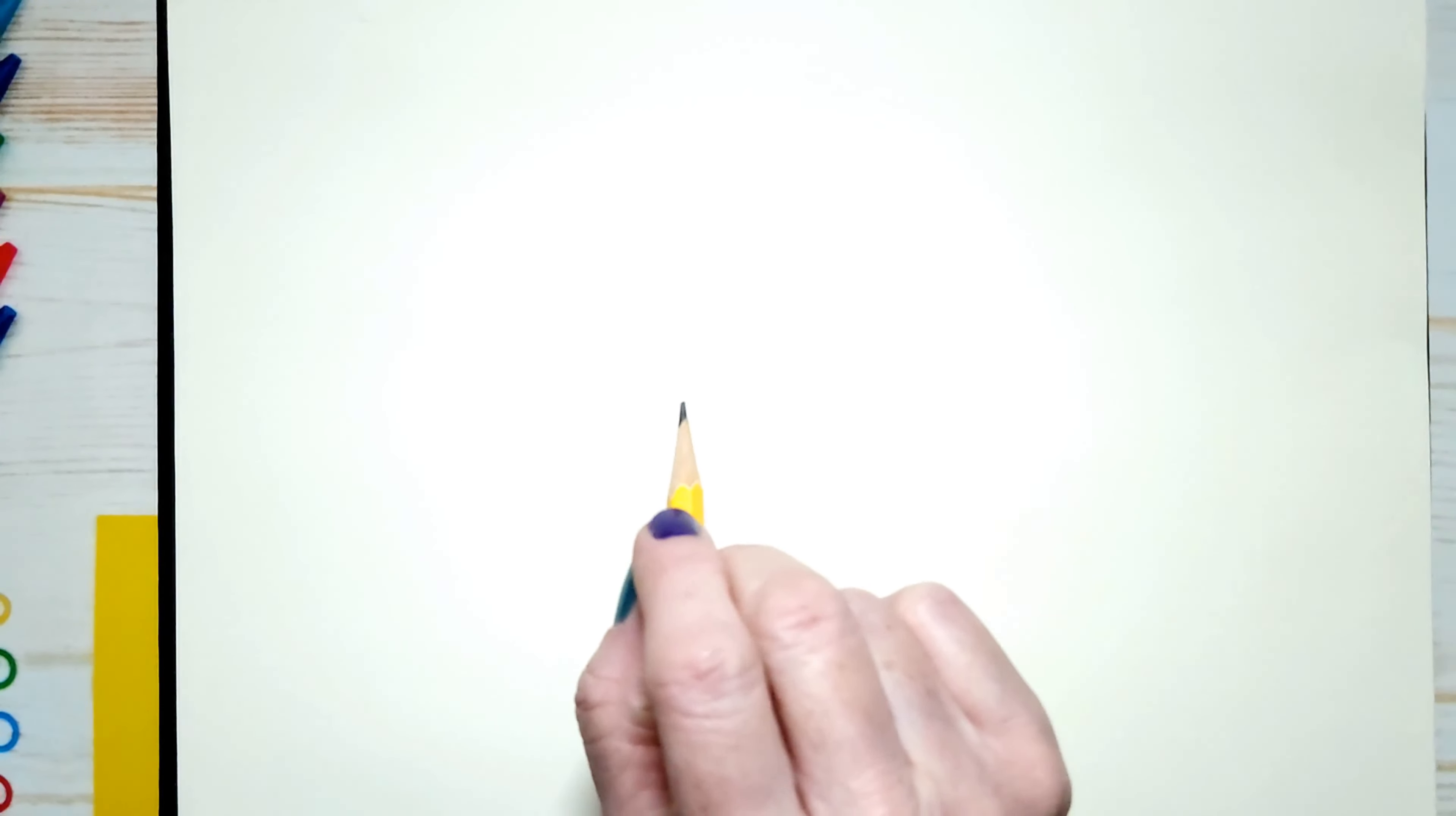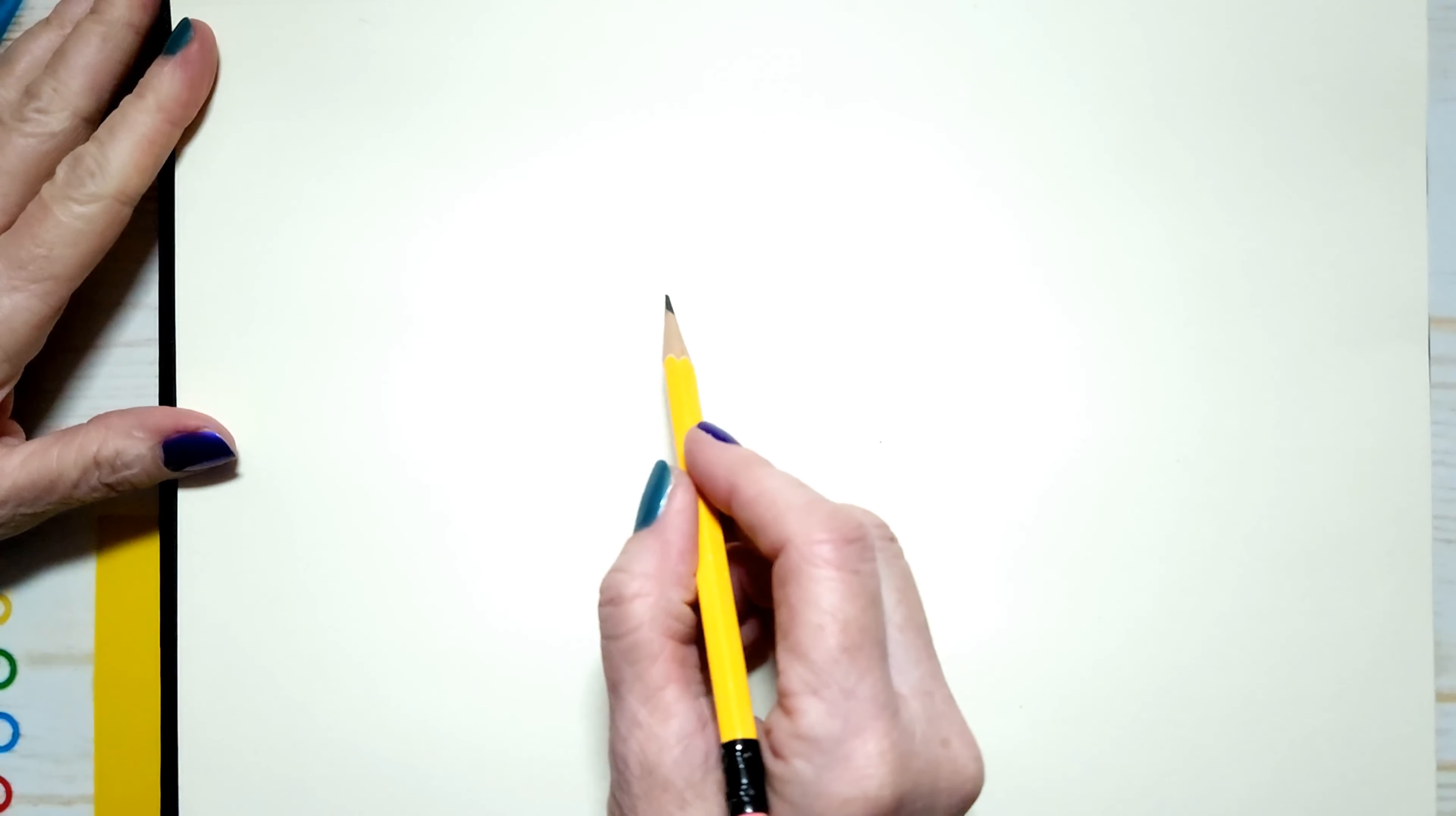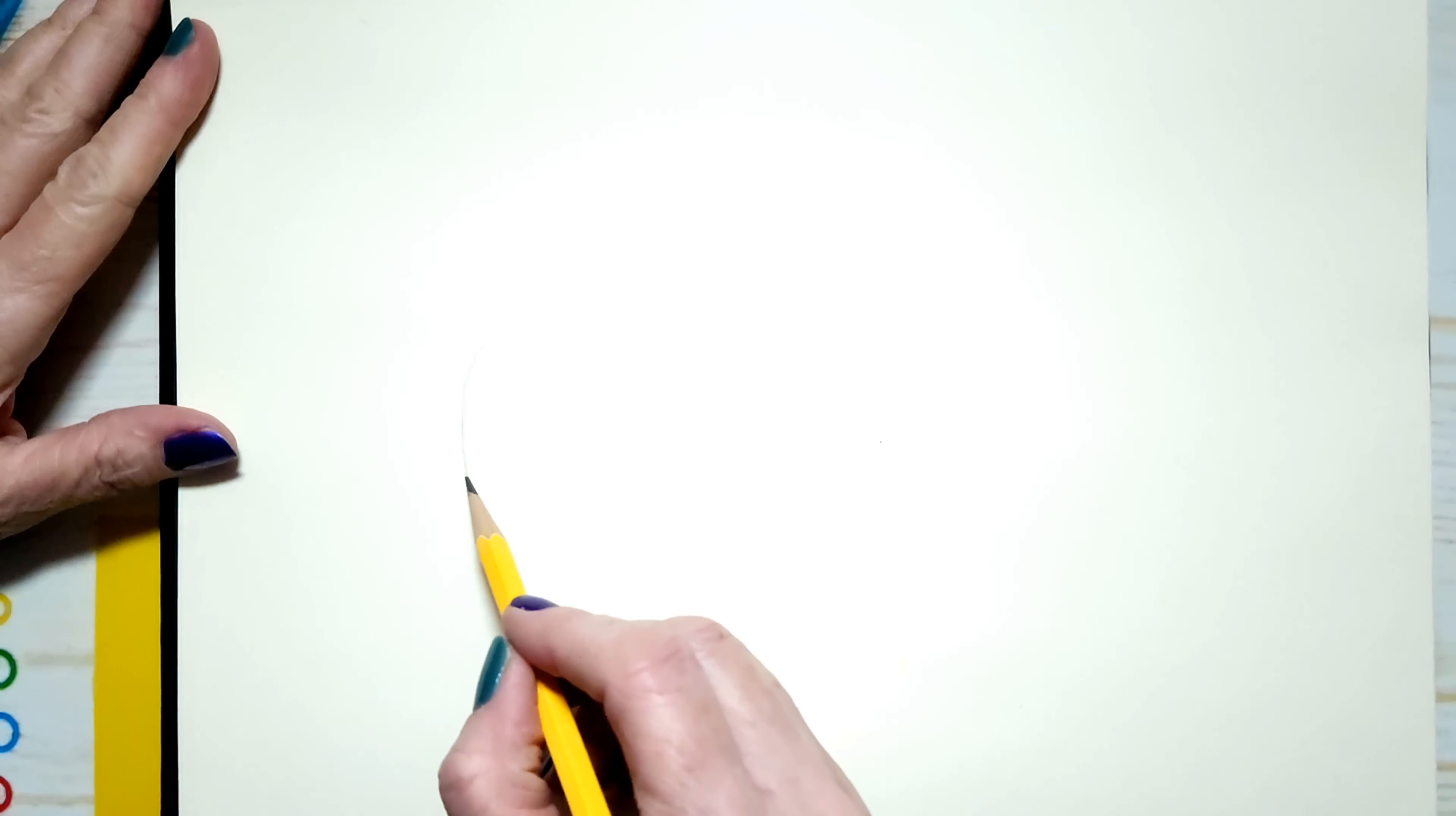Usually I draw with pencil then I outline and then I erase the pencil marks and then I add the marker. So we're going to do things a little differently today.